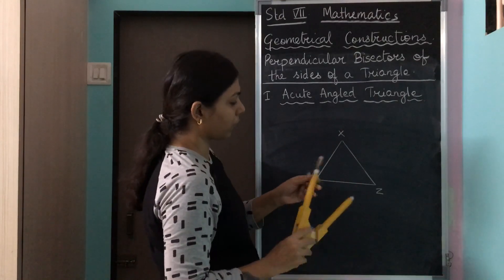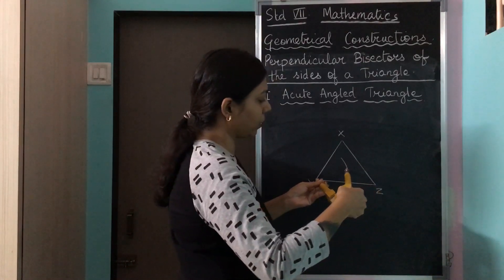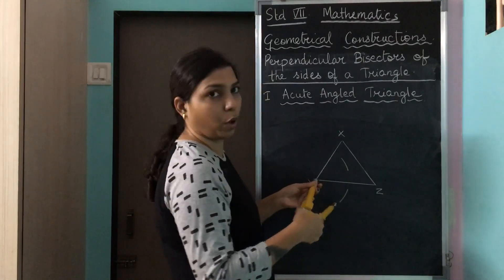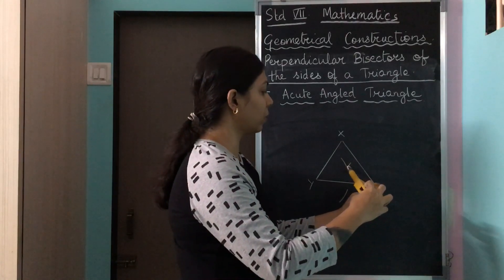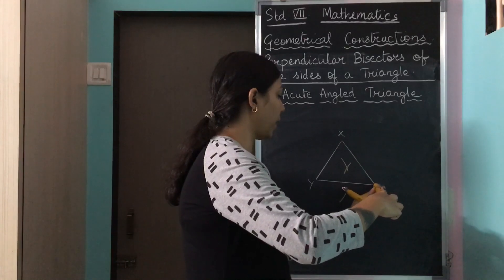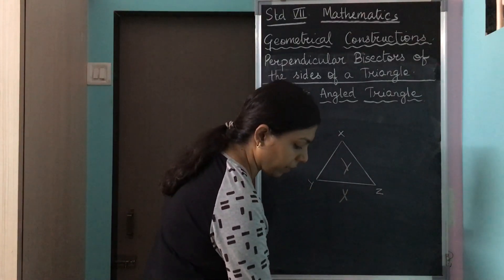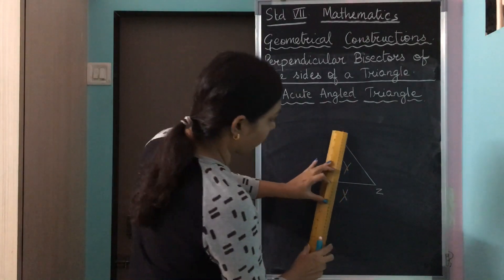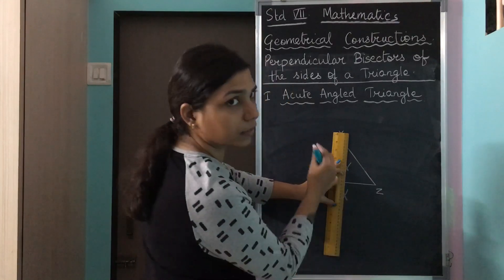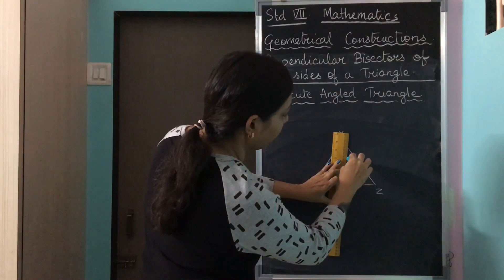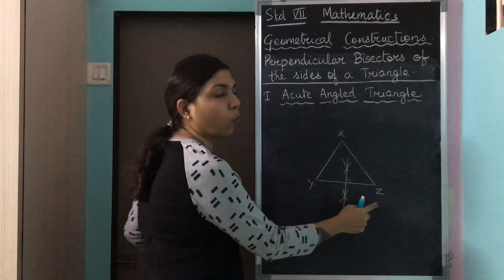I place the pointed part of the compass on point Y and draw my arcs — one at the top and one at the bottom. Then I keep the pointed part on point Z and draw the arcs, one at the top and one at the bottom. I have got my two X marks and I join those two points, adjusting the ruler so both points are connected. That gives me my first perpendicular bisector for side YZ.